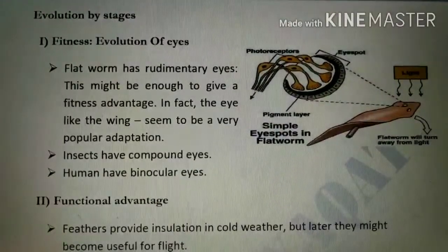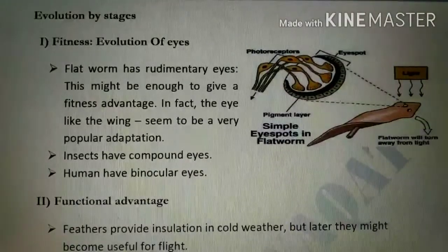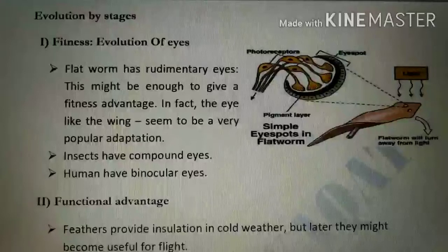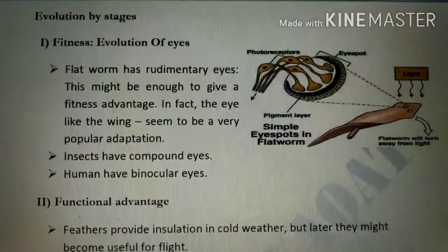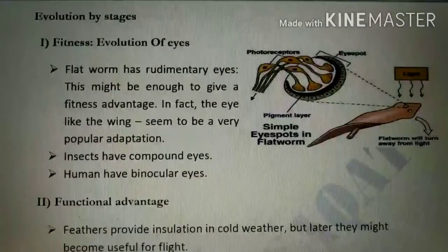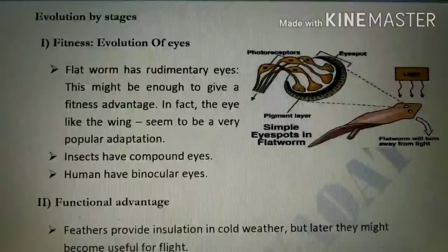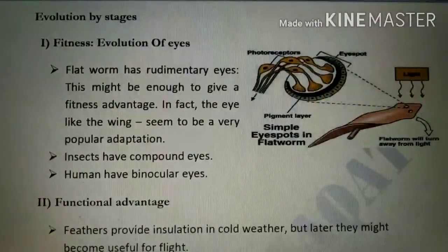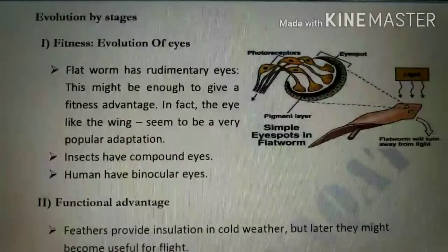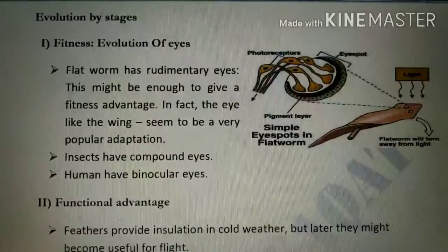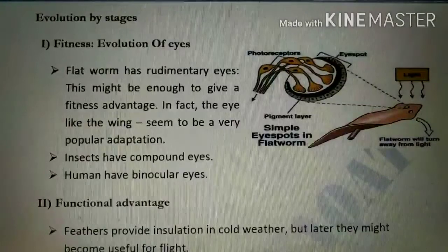The third point is that evolution is not a quick process — it is a slow process that takes millions of years. For example, the conversion from chimpanzee to human beings was not a one or two year process; it took millions to billions of years. Evolution occurs bite by bite, stage by stage.